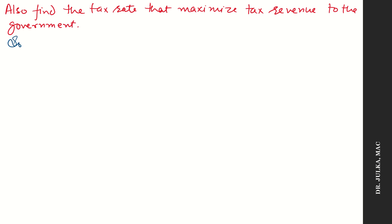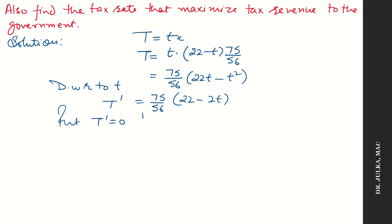Now we know that profit is maximum at x equals to (22 minus t) multiplied by 75 by 56. Now tax T equals to tx. Put the value of x here, we'll get T function equals to 75 by 56 times (22t minus t squared). Differentiate with respect to small t: 75 by 56 into (22 minus 2t). Put first derivative equal to 0 to find maximum or minimum points.